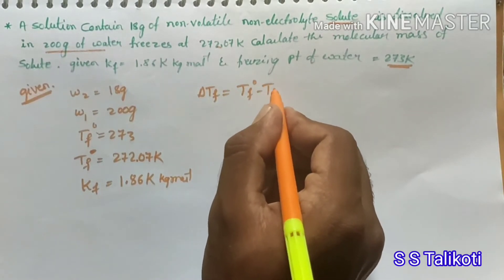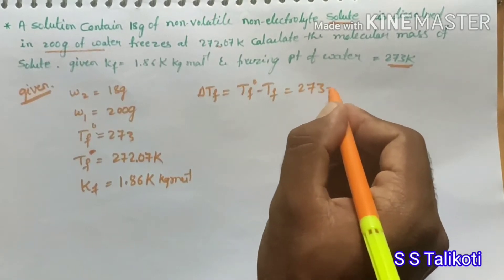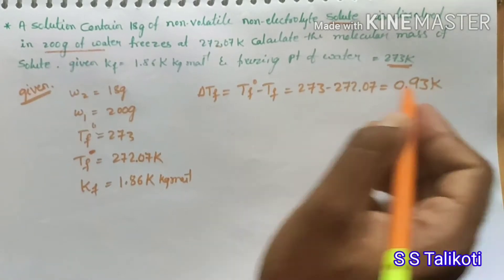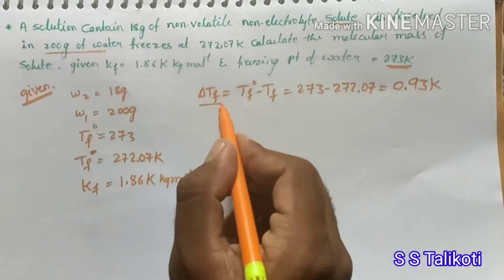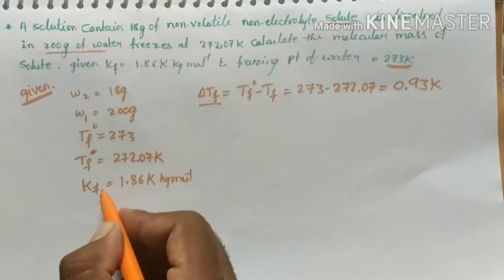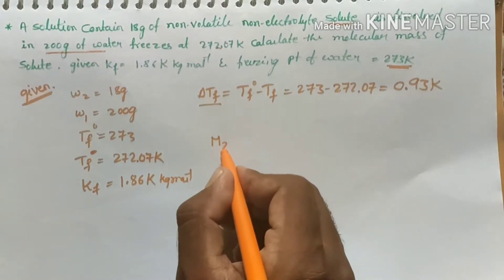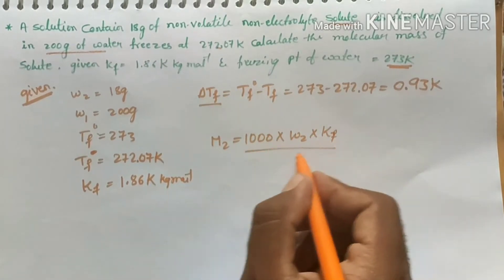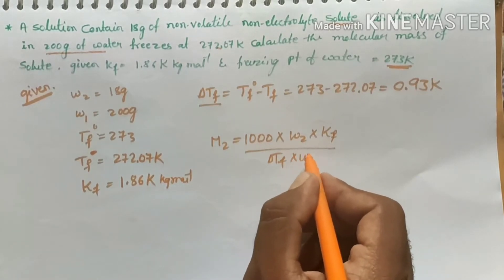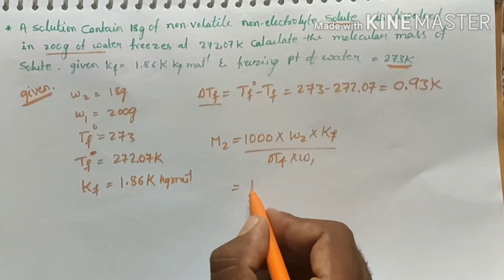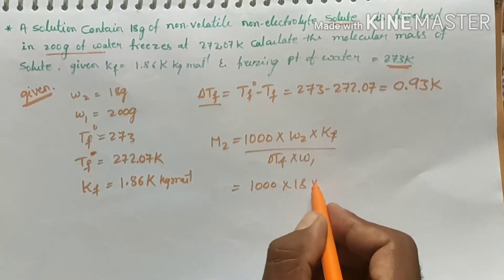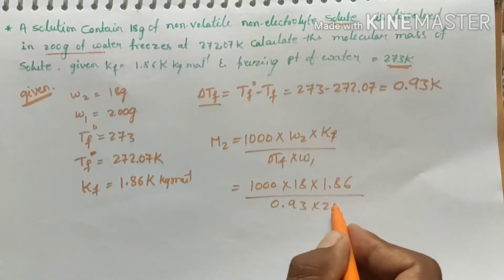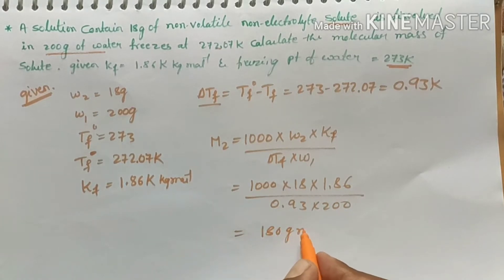To find delta Tf: delta Tf = Tf° − Tf = 273 − 272.07 = 0.93 kelvin. Then using the formula: M2 = (1000 × w2 × kf) / (delta Tf × w1). Substituting: M2 = (1000 × 18 × 1.86) / (0.93 × 200) = 180 gram per mole.